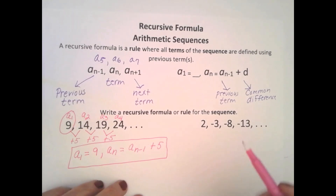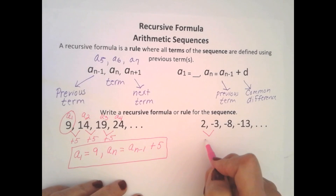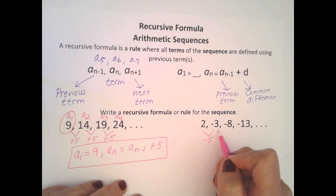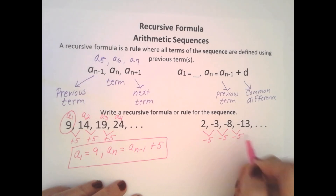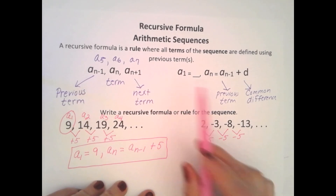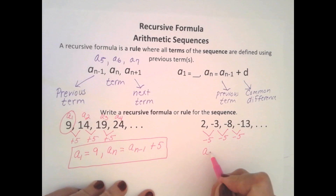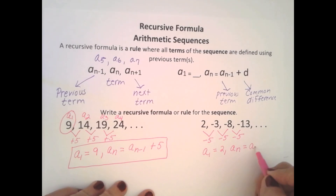Let's look at this sequence. From 2 to negative 3, I had to subtract 5. From negative 3 to negative 8, I had to subtract 5. And from negative 8 to negative 13, I had to subtract 5. I have a common difference of negative 5. We first need to write a sub 1: a sub 1 is 2. Then my recursive rule for a sub n is: I take the previous term, a sub n minus 1, and I'm going to subtract 5.